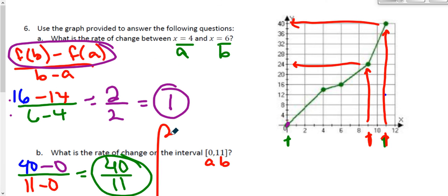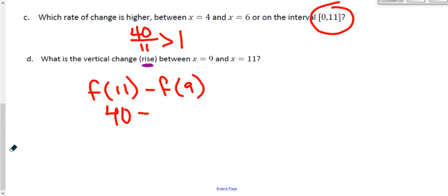Literally just asking how high is my change. So 40 minus 24 gives me the number 16. My rise is 16 units. That's it. So we're going to pick up with the next question in the next video.